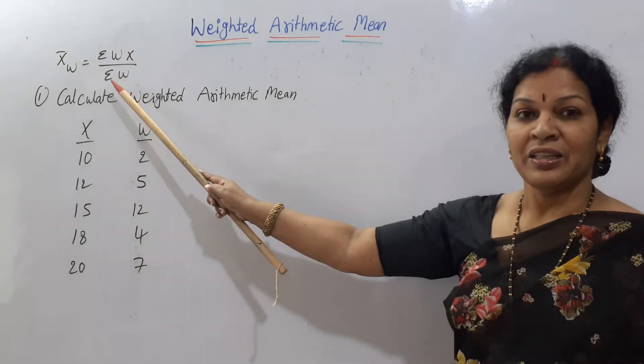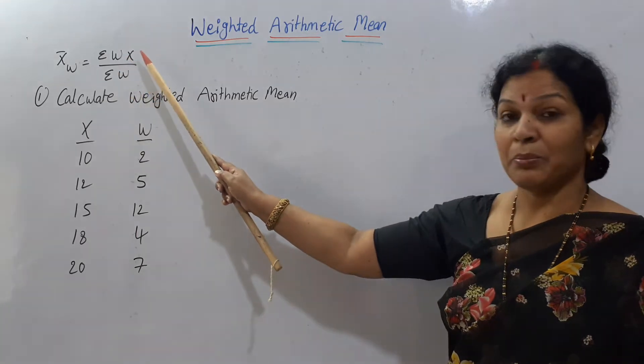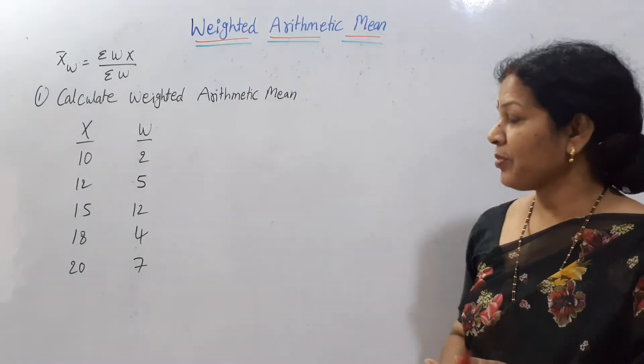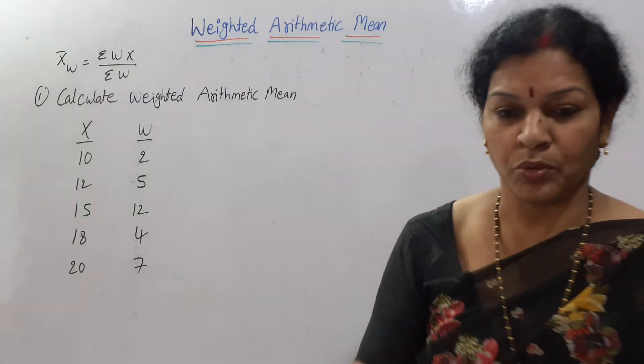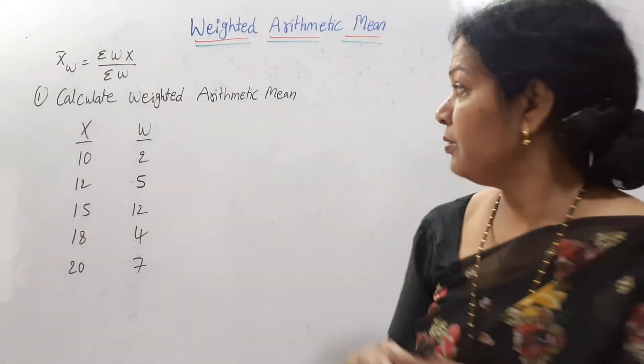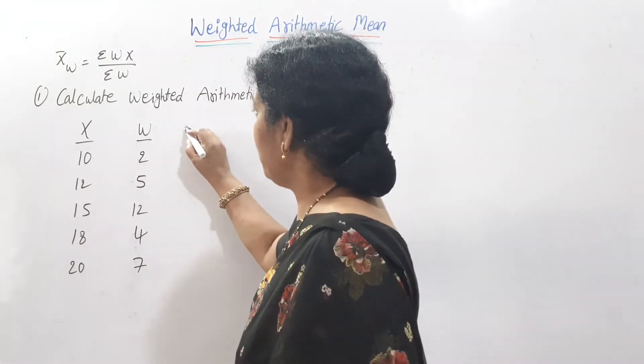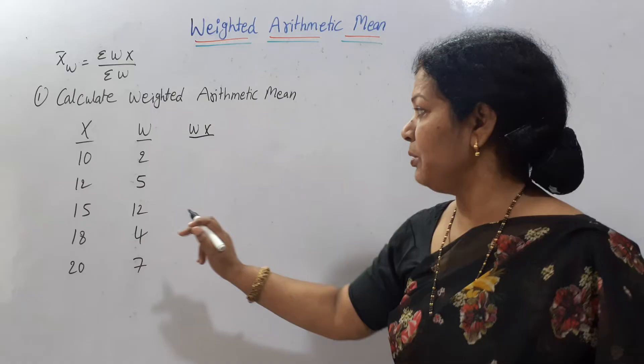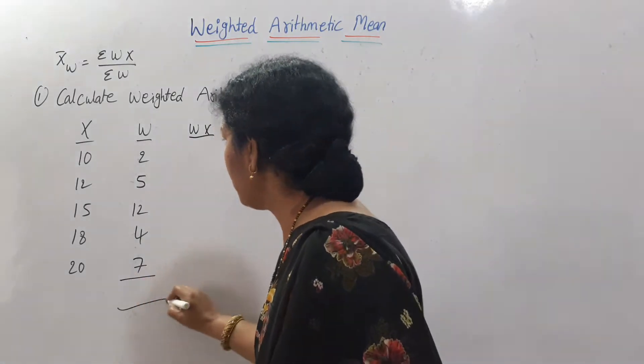We have to calculate the weighted arithmetic mean. What is the formula? x̄w = Σwx/Σw. This means we need wx, we need wx and also Σw, which means what is the total of this.